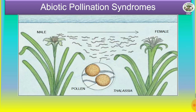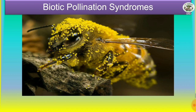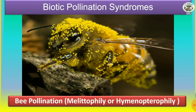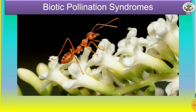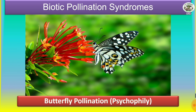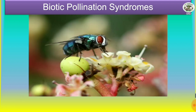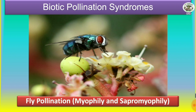The biotic pollination syndromes include: wind pollination called anemophily, water pollination called hydrophily, bee pollination called melitophily or hymenopterophily, ant pollination called myrmecophily, butterfly pollination called psychophily, and moth pollination called phalaenophily.